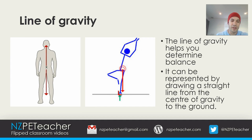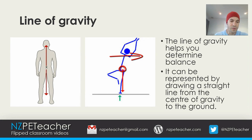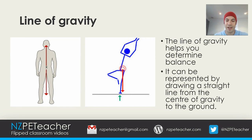Looking at the image on the right, because they're on one foot, they have a much smaller base of support. Also, their side lean shifts their centre of gravity to the left of them. This causes the line of gravity to fall outside the base of support, causing the body to become unbalanced and likely to topple unless action is taken to increase their base of support.